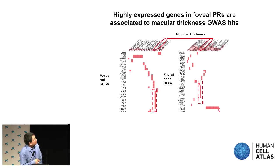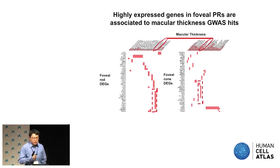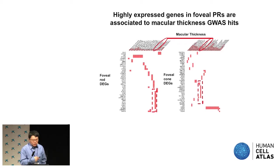When we look at the GWAS hits and examine differential gene expression between the fovea and peripheral regions, one interesting GWAS hit is for macular thickness, which makes some sense because those genes differentiate between macular and peripheral regions. This is still very preliminary and we're still in the middle of figuring out what's really happening there.